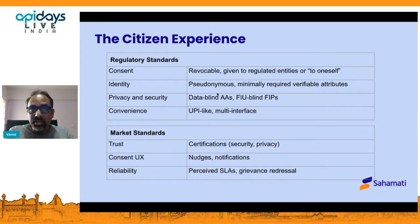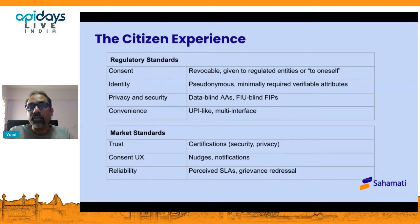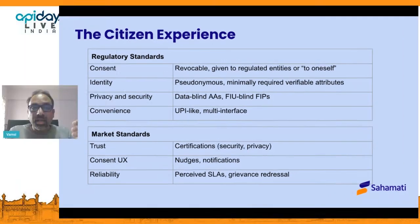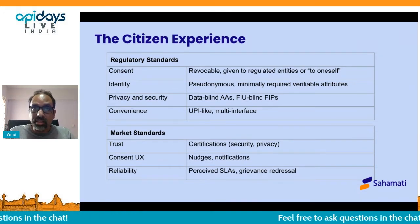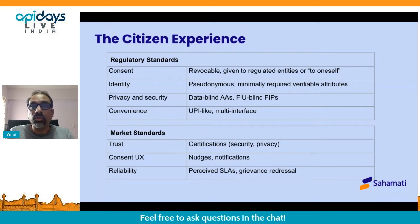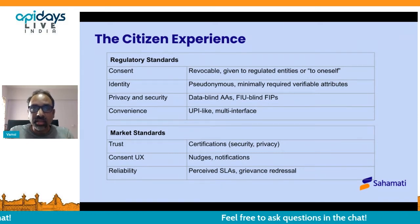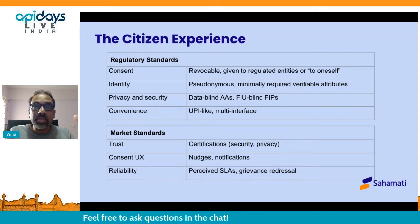We spoke a lot about identity — it's important that while there is an identity layer, as far as this service is concerned, the idea is pseudonymity. There is really no need for the FIPs to know a whole lot because they already know the customer. Pseudonymous identity with minimally required verifiable attributes is the key element. The AAs are fundamentally data blind — the intermediaries themselves cannot store, process, analyze, or view any of the data; they can at best do transient storage. Equally importantly, the FIPs — the people who provide information — are blind as to where the data is going. The FIPs and the FIUs both have interest in extending relationships with the same consumer, so the FIPs are blind as to who the FIUs are, preserving the privacy and security of the whole interaction.